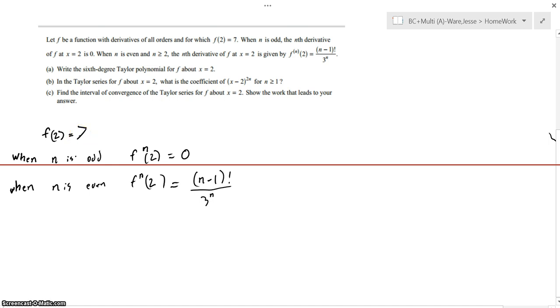And then, when n is odd, the nth derivative, so any derivative of any degree, because it states here that f is a function with derivatives at all orders. When n is odd, f to the nth derivative equals 0, so it just doesn't exist, it's not there. However, when n is even, f to the nth derivative of 2 equals n minus 1 factorial over 3 to the n.